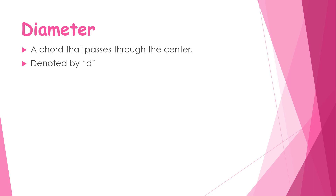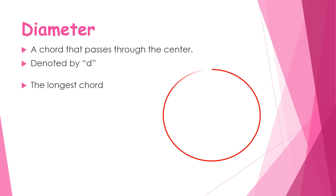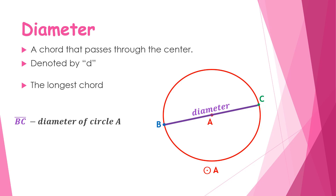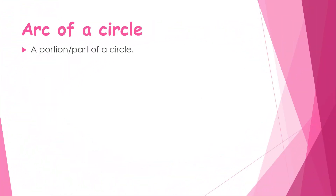The diameter is denoted by the letter d and is considered the longest chord of the circle. On Circle A, with points B and C on the circle, if you draw a segment joining B and C passing through center A, you form a diameter. Therefore, segment BC is a diameter of Circle A.